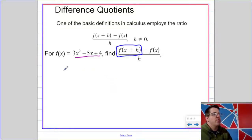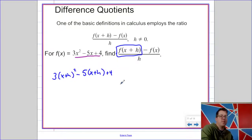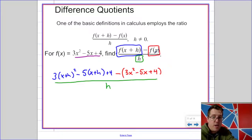So this first function value is going to be 3 times x plus h quantity squared minus 5 times x plus h plus 4. Following that is going to be subtraction of all of 3x squared, subtracting negative 5x and subtracting positive 4. And then we're going to divide by h, okay? So hopefully you can see all of those different parts before things get more complicated.